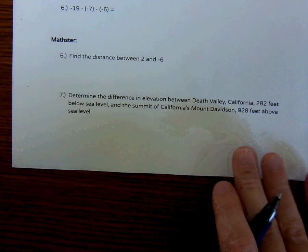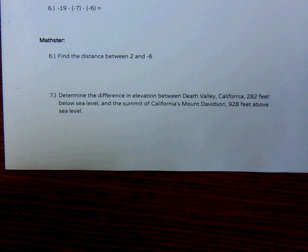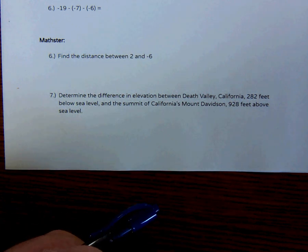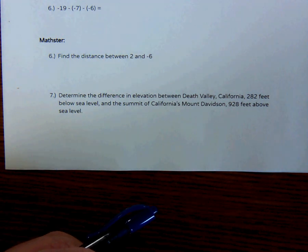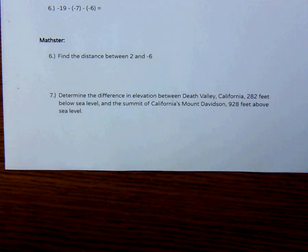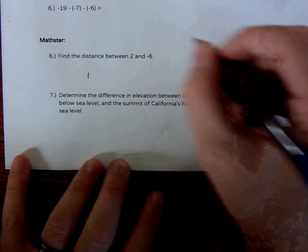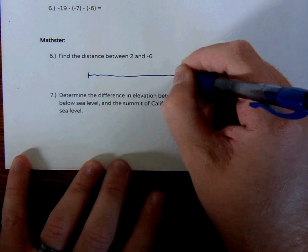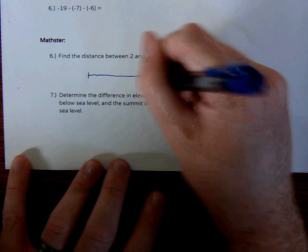We want to find the distance between 2 and negative 6. So distance is interesting. Distance is actually a positive number. Distance is always a positive number. The thing is, though, is that even though it's a positive number, we think of it, we find it by subtracting. So let's imagine we had these two numbers on a number line. We wanted to find the distance between.